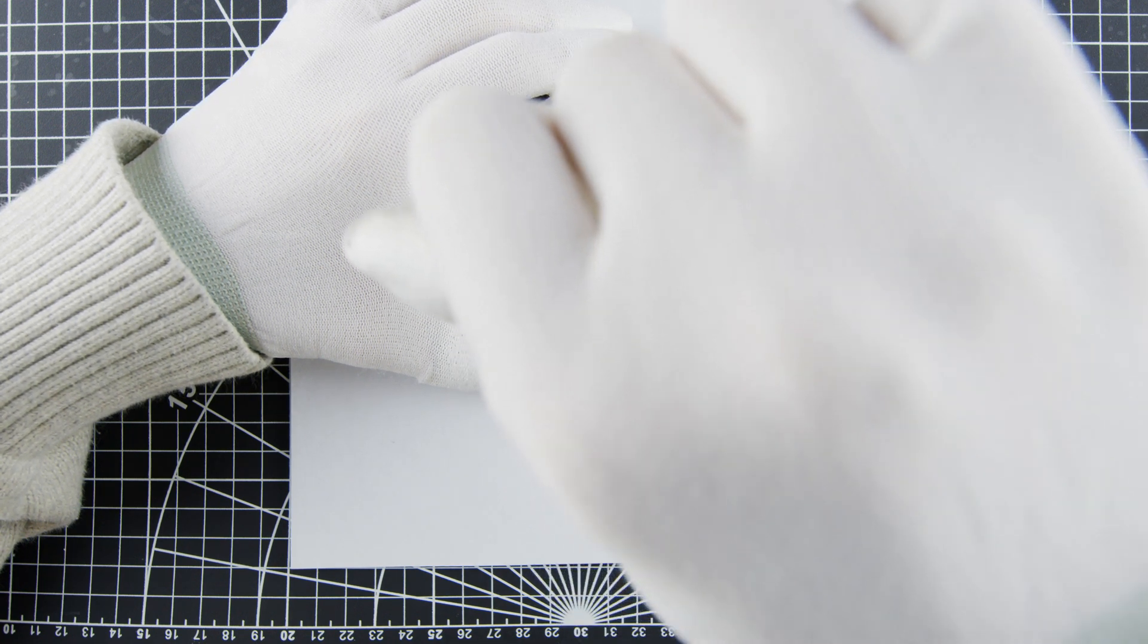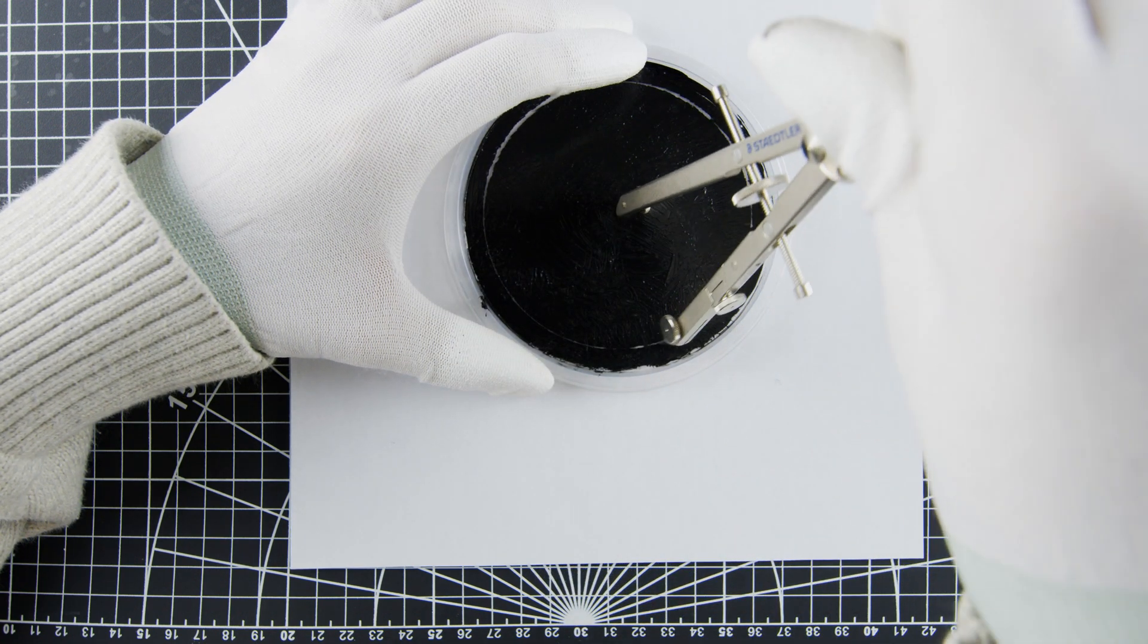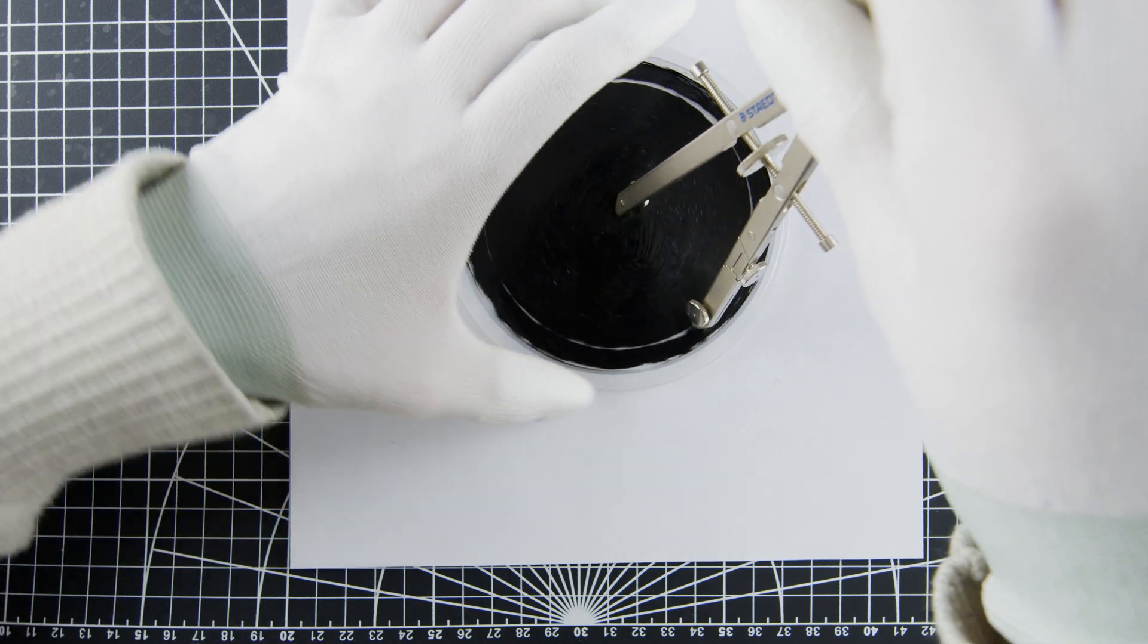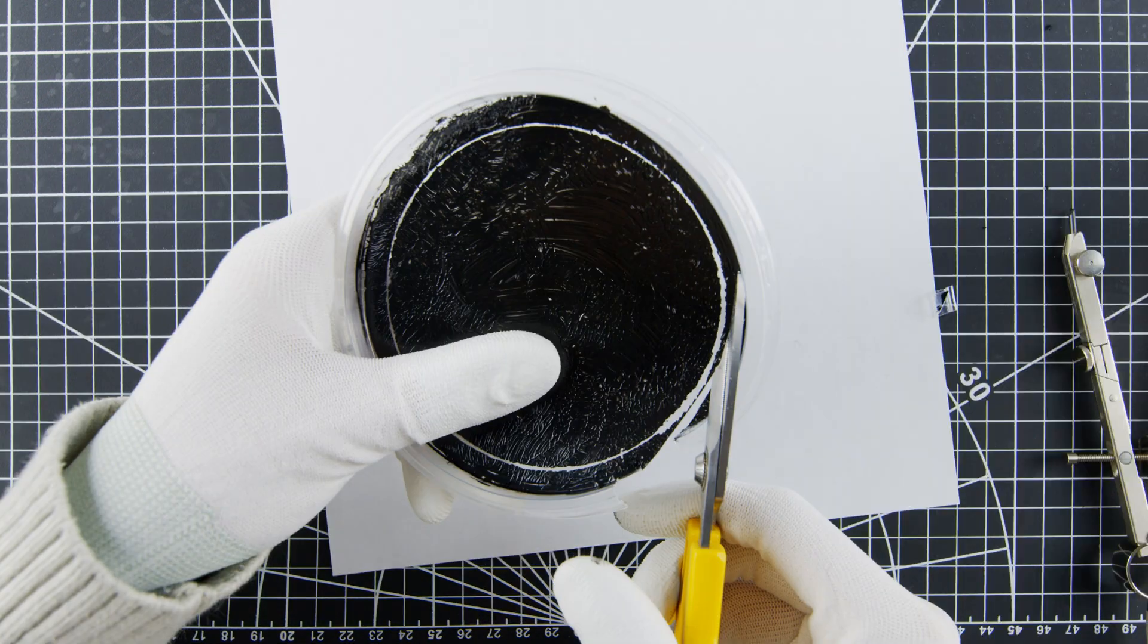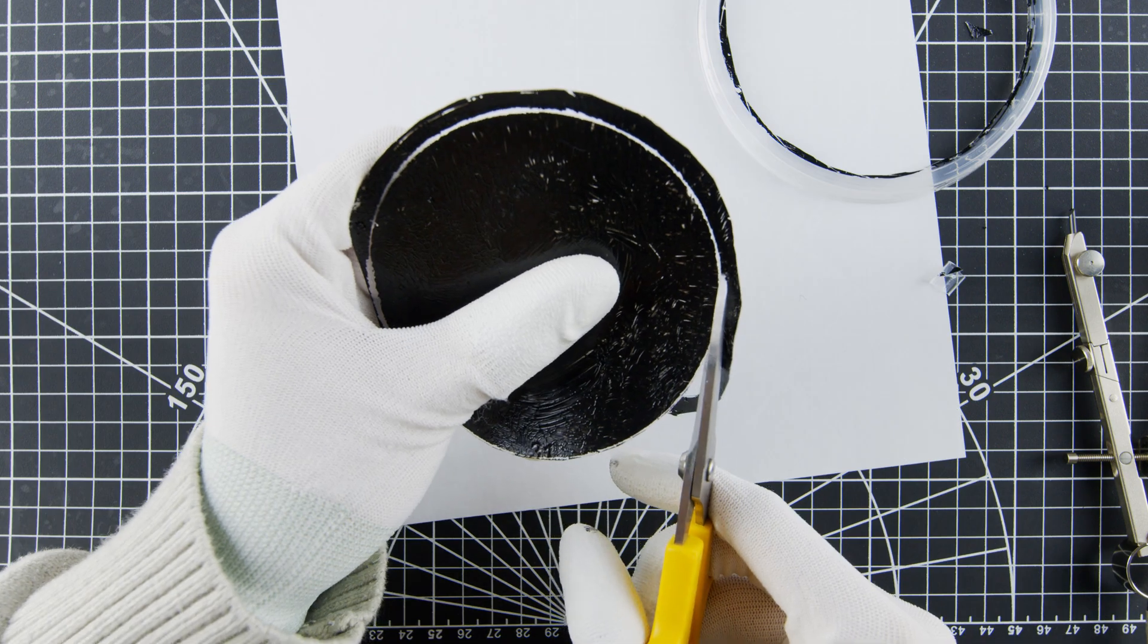Next, I drew a circle using the compass. It lightly scratched off the acrylic paint, leaving behind a line. I cut out the middle section and trimmed it to the circle.